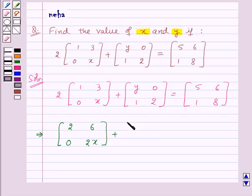Plus 2 by 2 matrix with elements y, 0, 1, 2 is equal to 2 by 2 matrix with elements 5, 6, 1, 8.